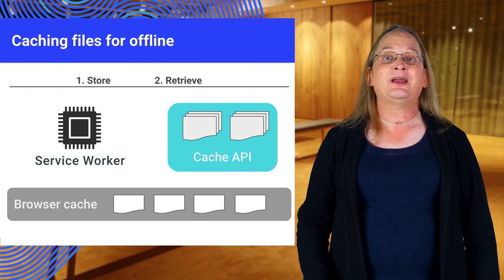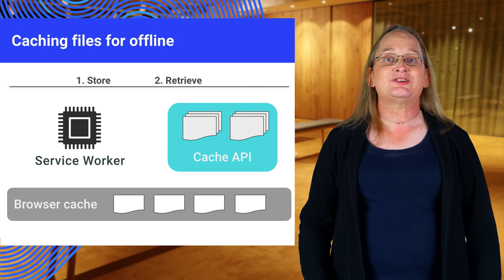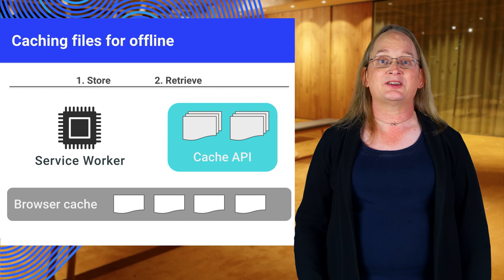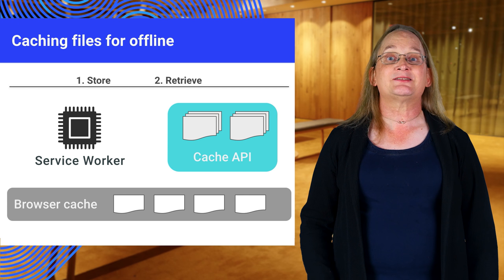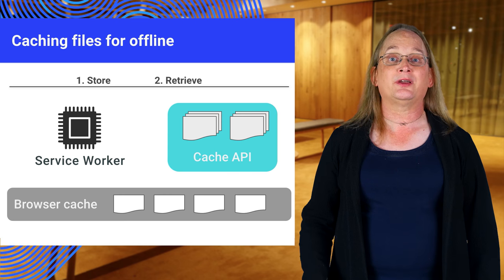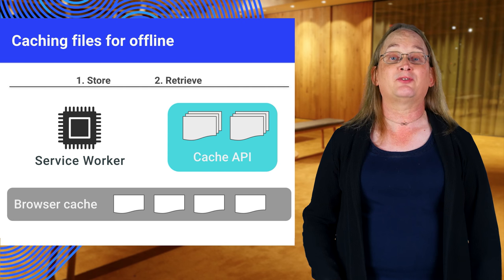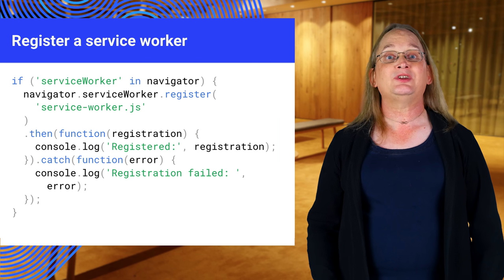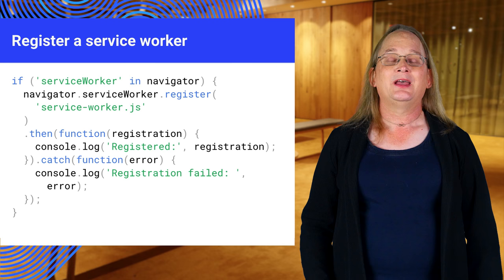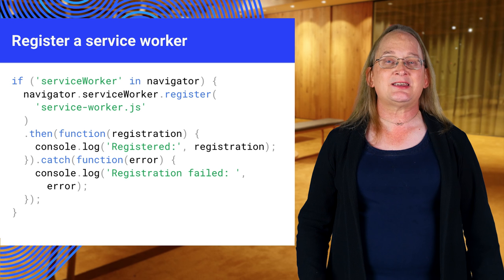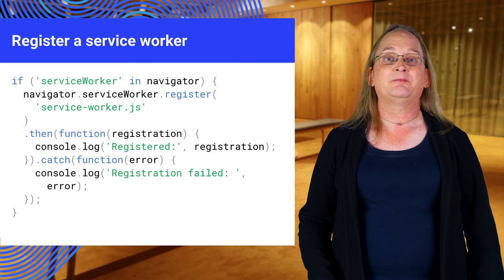You need to write a script that does two things: fetch and store static assets via the cache API, and then intercept fetch events inside the service worker and retrieve the file from the cache. But first, you need to enable the service worker. It's exposed on window.navigator, and the best test is to use the 'in' keyword to check for the property.